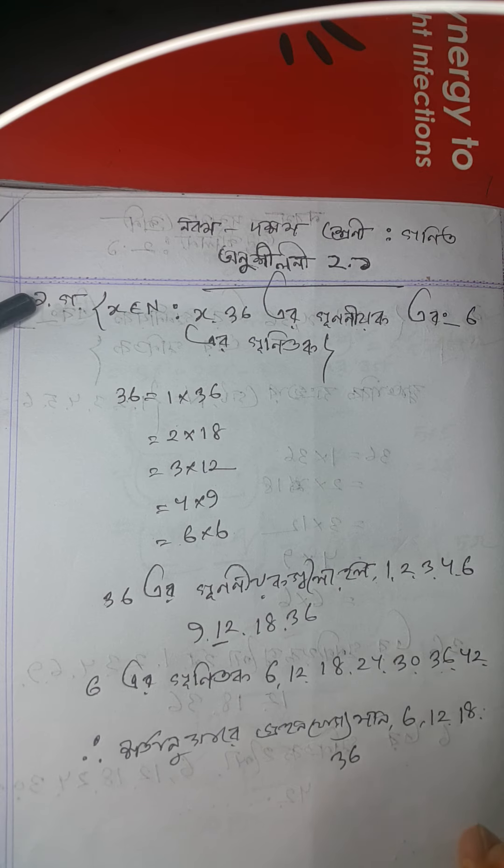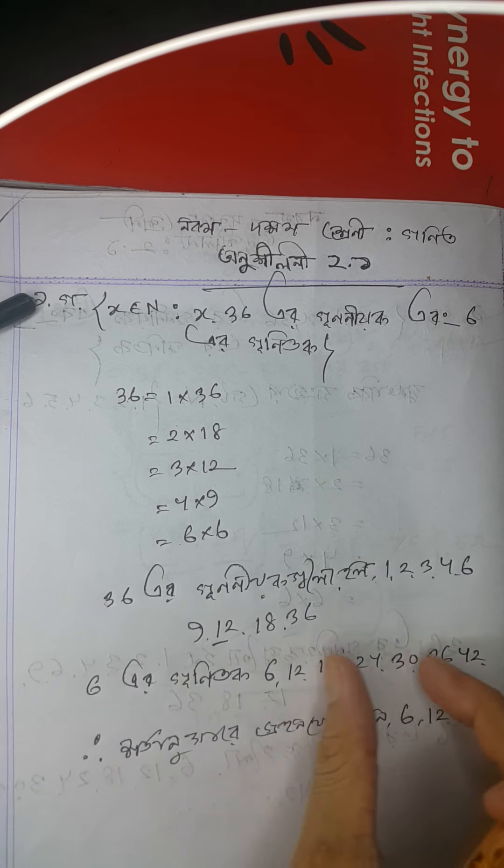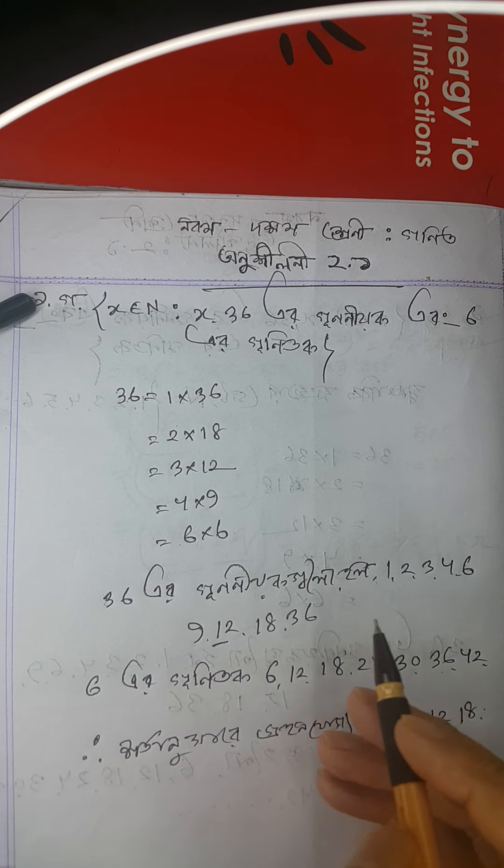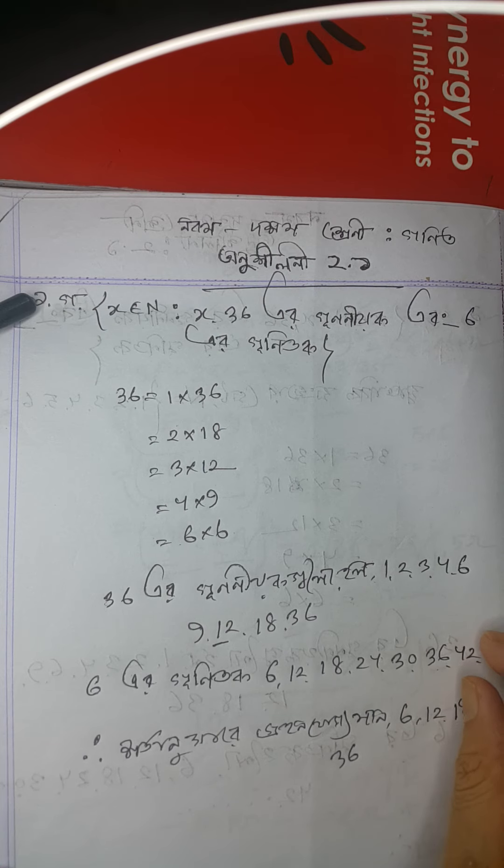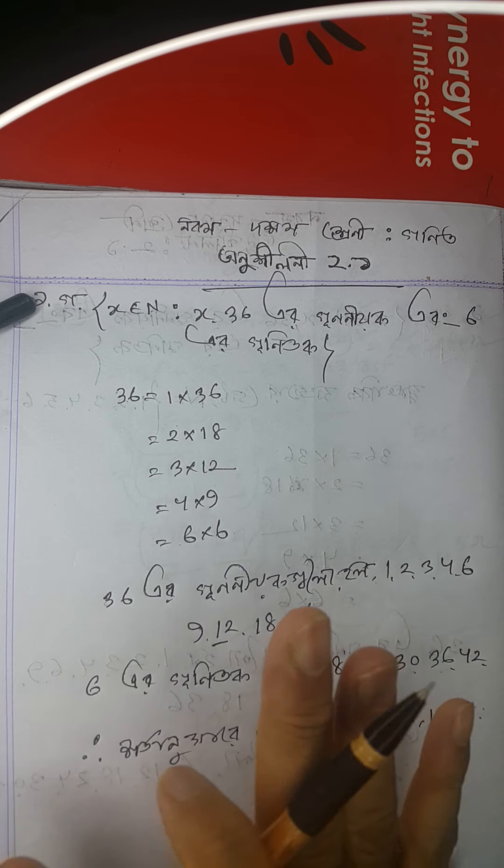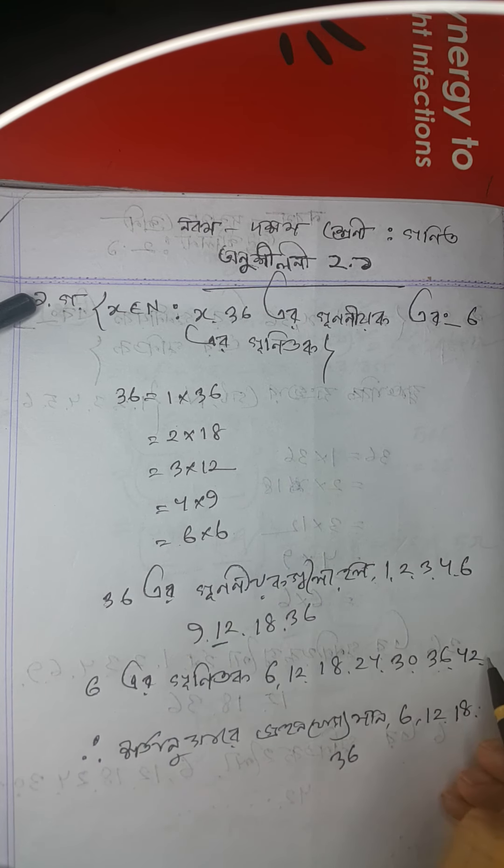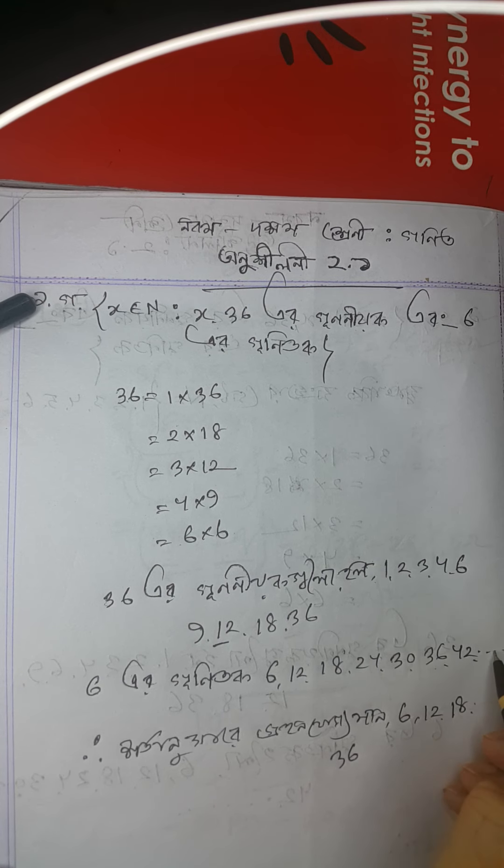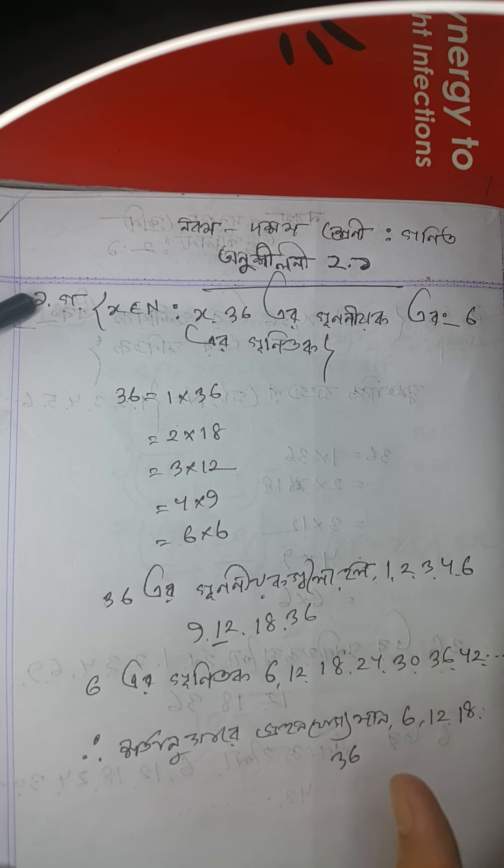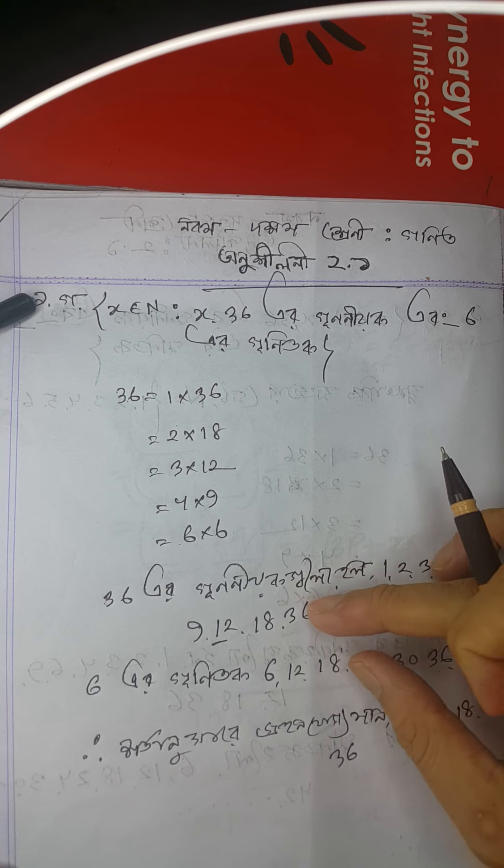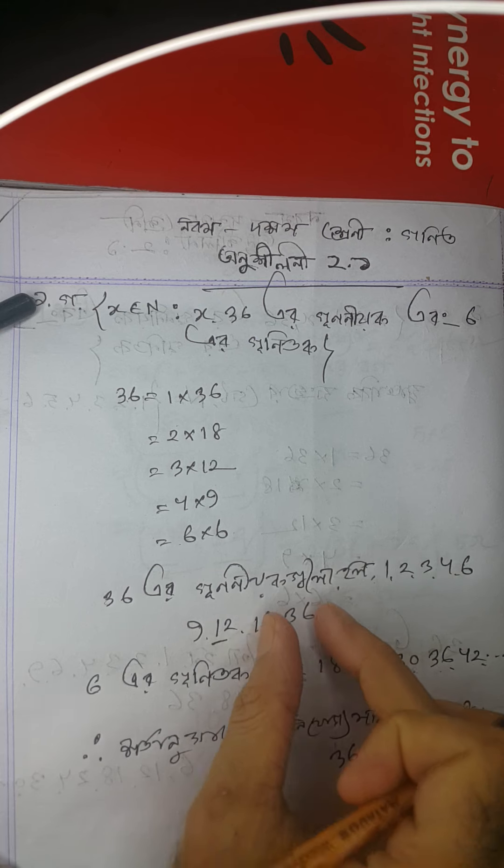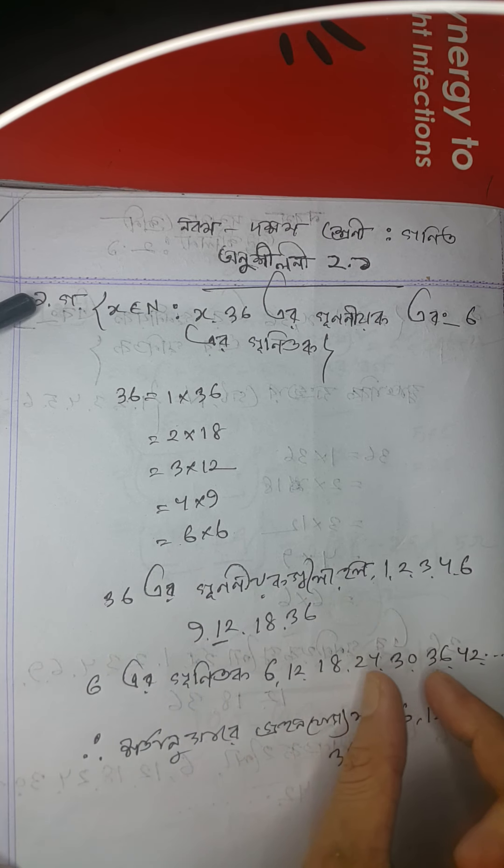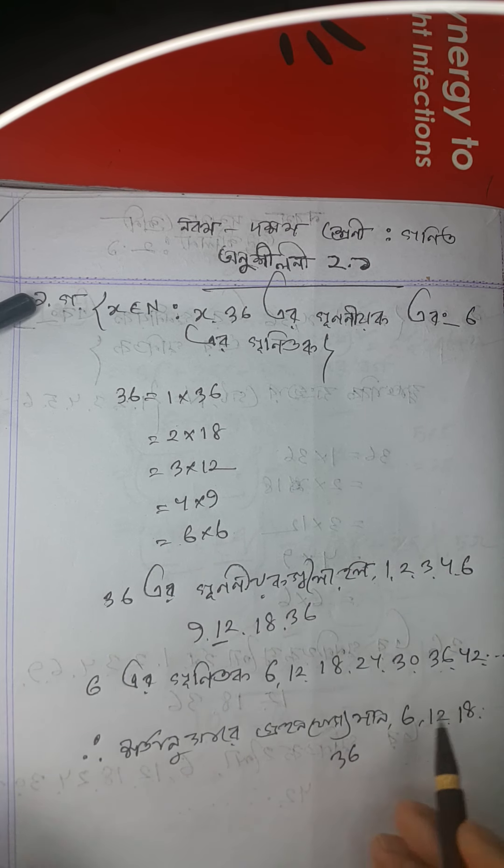Let's verify: 36 is the last number in our set. We need to confirm that all these numbers are indeed both factors of 36 and multiples of 6. We can verify each one systematically.